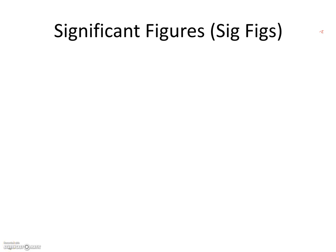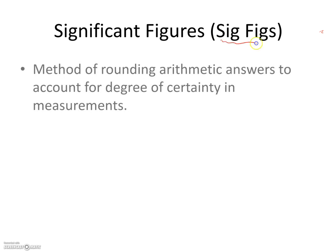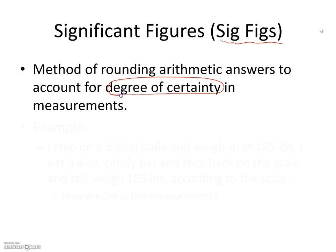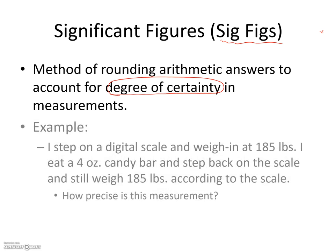We're going to begin our discussion on what we call significant figures, or often just referred to as sig figs for short. We use sig figs as our method of rounding answers to account for the degree of uncertainty in our measurements.